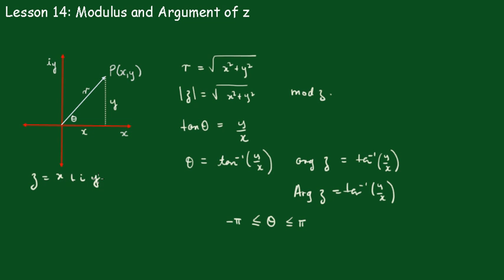Now, we can put this in a polar form very simply, because from here we can see that x over r is equal to cos theta, which means x equals r cos theta, and y over r equals sin theta. So, y equals r sin theta.